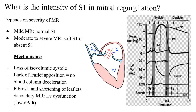Specifically, in cases of rheumatic mitral regurgitation, the mitral leaflets may undergo fibrosis and shortening. As a result, there is rolling up of the tips of these mitral leaflets leading to leakage. And there is no blood column deceleration leading to a louder first heart sound, which is seen in mitral stenosis.